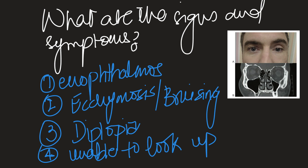The second point is ecchymosis or bruising. Whenever there is trauma the soft tissues are injured and some blood seeps into the surrounding area, making a bruise — a discoloration on the skin. The third point is diplopia, meaning double vision, and this is related to the fourth point: the patient is unable to look up. On examination you will find enophthalmos, and when you ask the patient to look upwards they will not be able to do so.